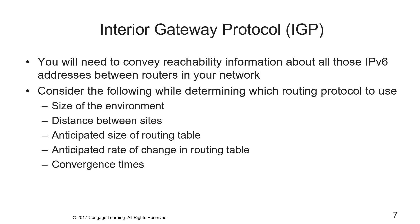For your IGP, you need to convey reachability information about all IPv6 addresses between routers on your network. There are many standard and proprietary options for routing v6, such as OSPFv3 (Open Shortest Path First version 3), EIGRP for IPv6 (Enhanced Interior Gateway Routing Protocol), and others. You also have to consider factors like the size of the environment, distance between sites, anticipated size of the routing table, rate of change in the routing table, and convergence times.